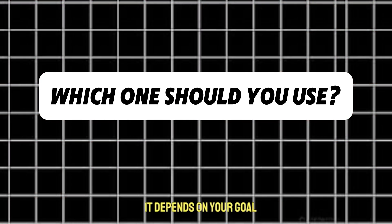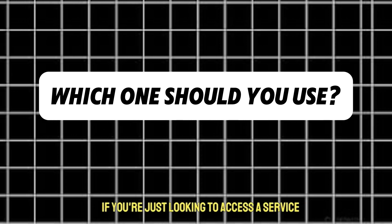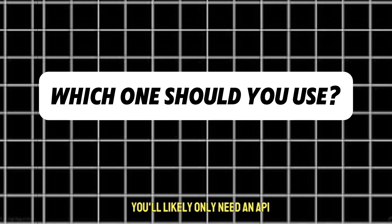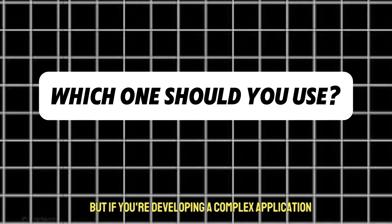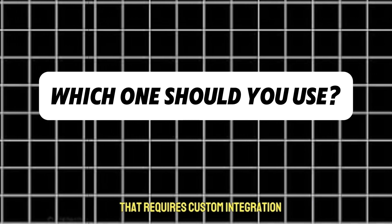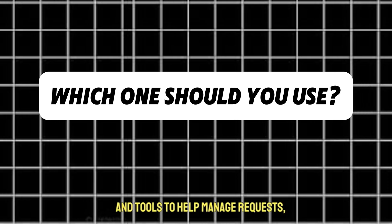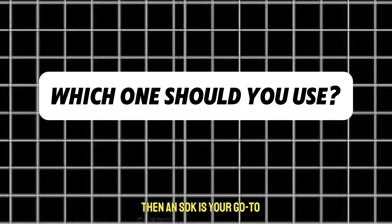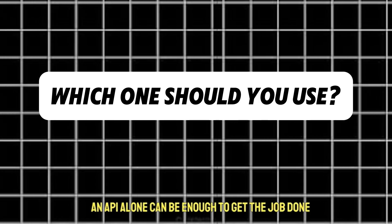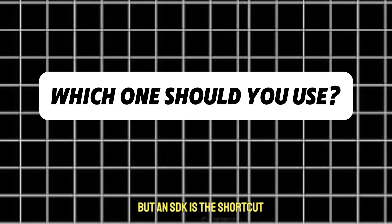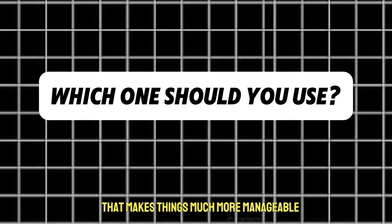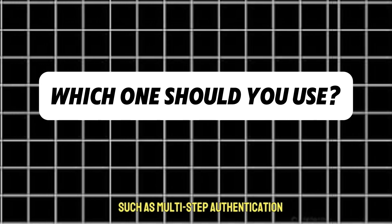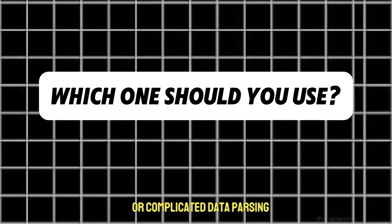Which one should you use? It depends on your goal. If you're just looking to access a service or pull data into your app with minimal hassle, you'll likely only need an API. But if you're developing a complex application that requires custom integration — where you need specific libraries and tools to help manage requests, authentication, and responses — then an SDK is your go-to. Technically, an API alone can be enough if you're ready to write the code, but an SDK is the shortcut that makes things much more manageable, especially if the API requires intricate handling such as multi-step authentication or complicated data parsing.